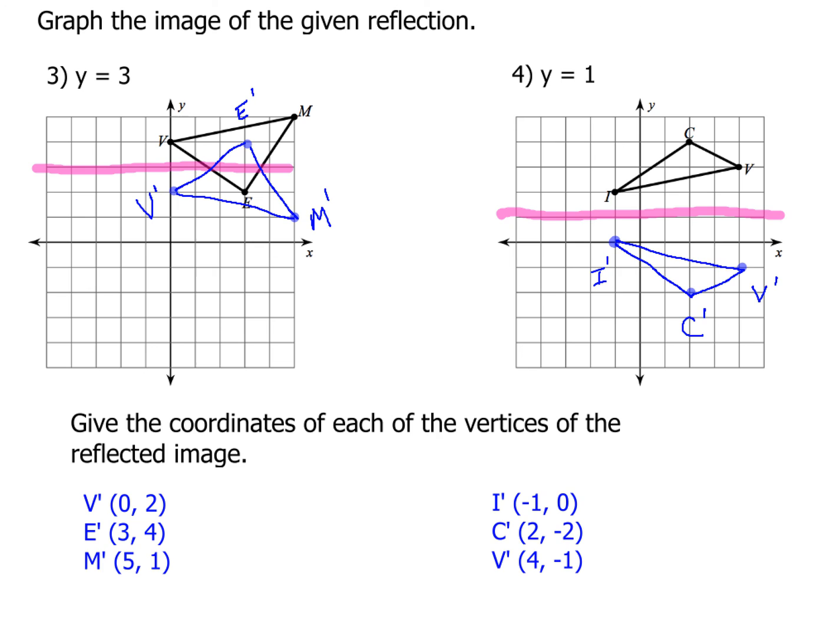On question number four, hopefully you came up with the image that's there shown on the right hand side, and the coordinates (-1, 0) for i prime, (2, -2) for c prime, and (4, -1) for v prime.